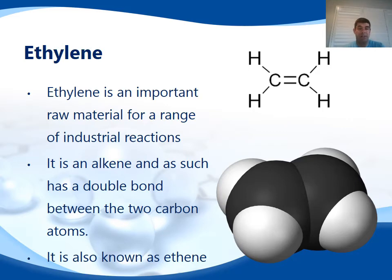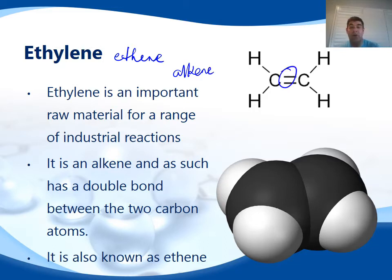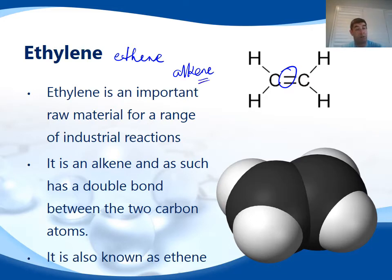Firstly, ethene or ethylene is an alkene. That's its group and that means that it has a double bond present in the structure — that's its functional group. The 'ene' is an indicator of a double bond and so we have a double bond between the two carbons. Because it's 'eth', and 'eth' means two.